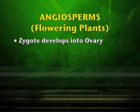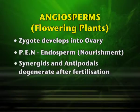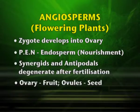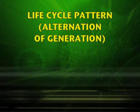The zygote develops into the embryo. The primary endosperm nucleus develops into the endosperm, which is responsible for nourishment. The synergids and antipodal cells degenerate after fertilization. After fertilization, the ovary develops into the fruit and the ovules into the seed. In the life cycle of an angiosperm, the diploid sporophyte alternates with the haploid gametophyte — the sporophyte is the plant body and the gametophyte comprises the gametes.